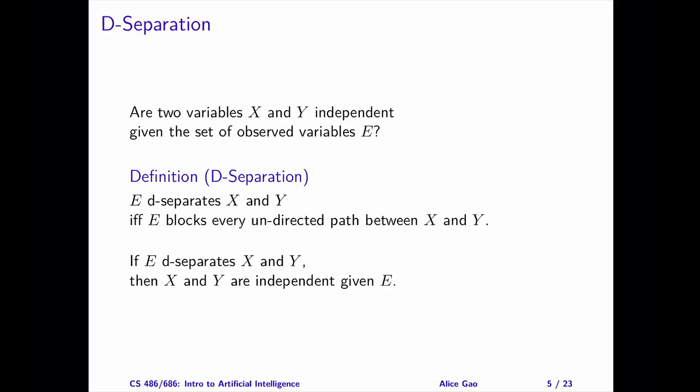Here's the definition of D-separation. There are two variables X and Y, and the set of observed variables E. If the observed variables E block every undirected path between X and Y, then we say that E D-separates X and Y.